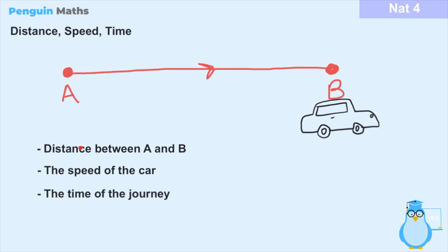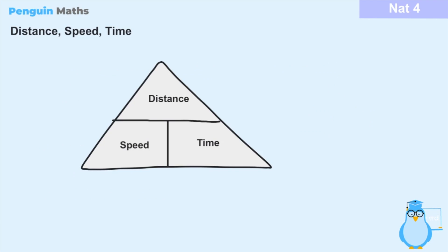Now, between distance, speed, and time, we can use each one of these to calculate the other, because they are all related variables. All of these tie into one another, and that means we can form a relationship between speed, distance, and time. Probably one of the easiest ways to remember the relationships is by using this triangle: we have distance on top of the triangle, and beneath the distance we have both speed and time.